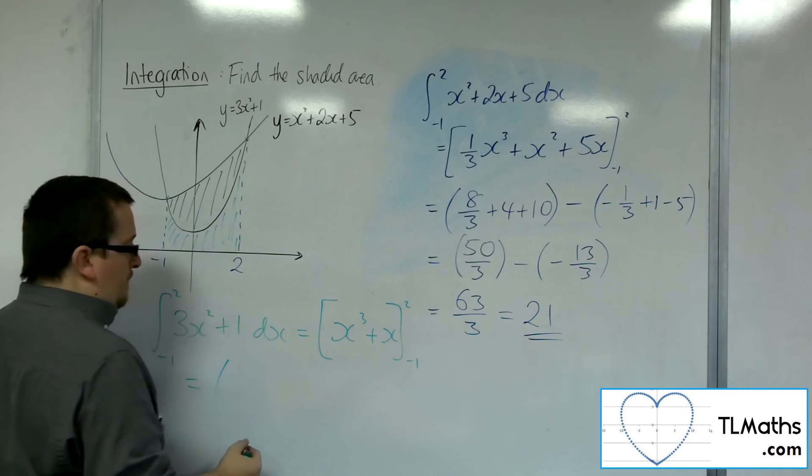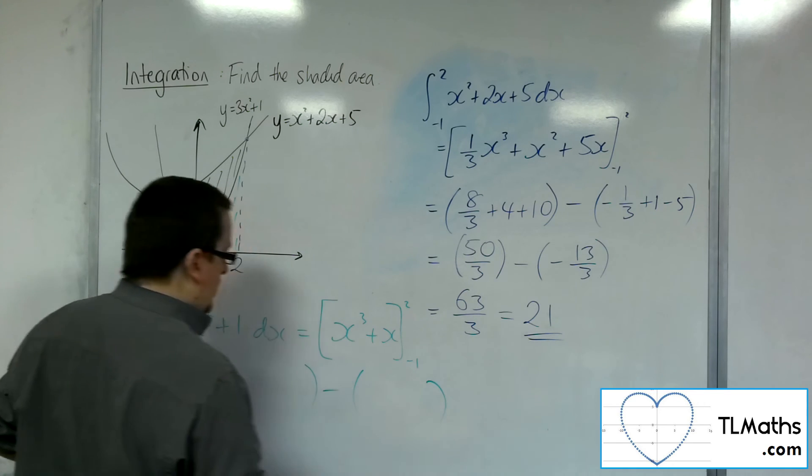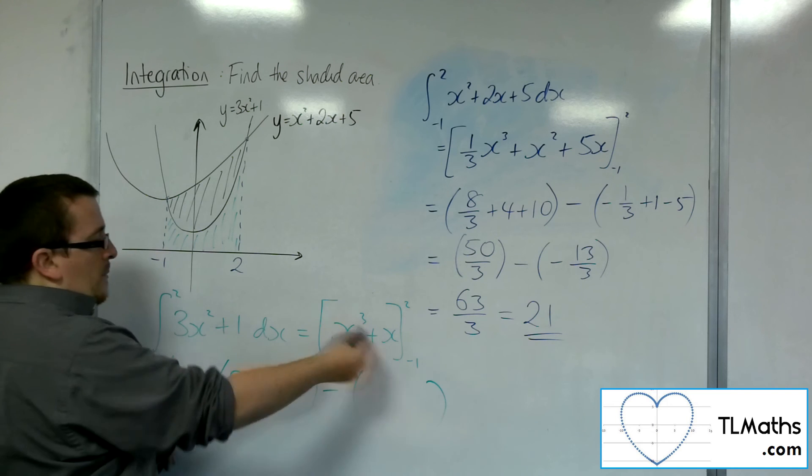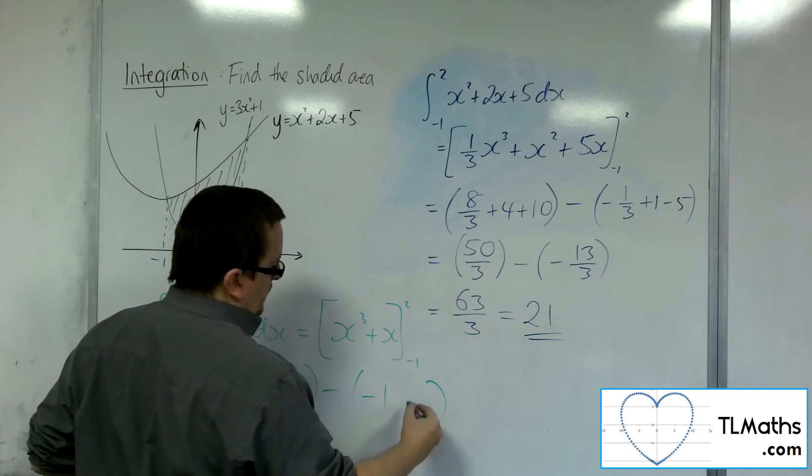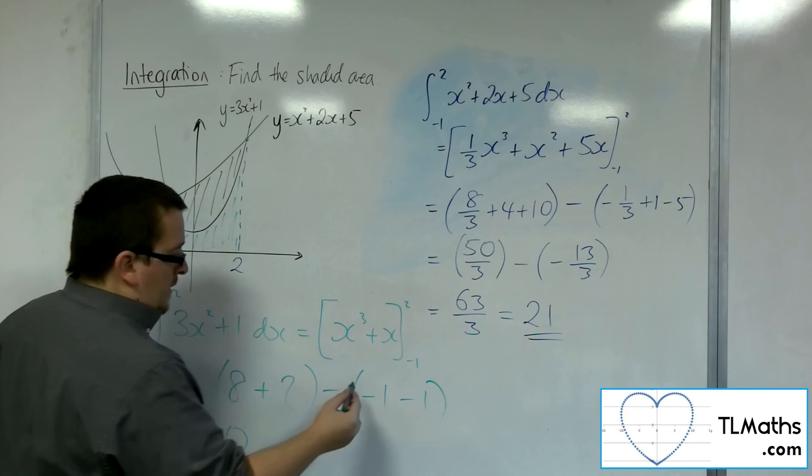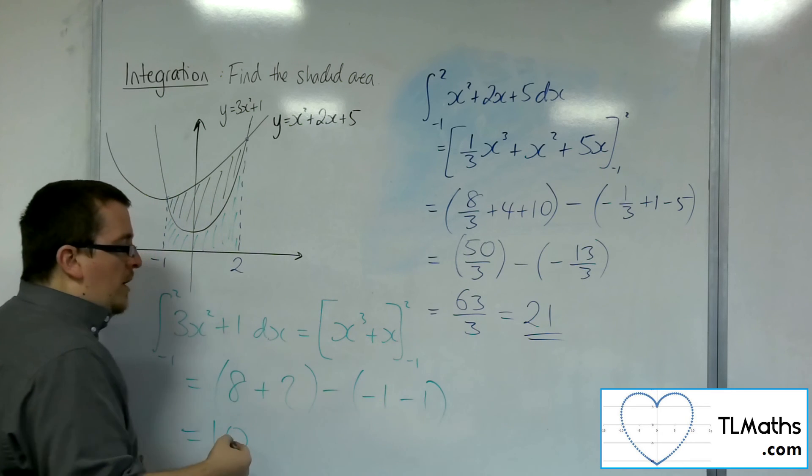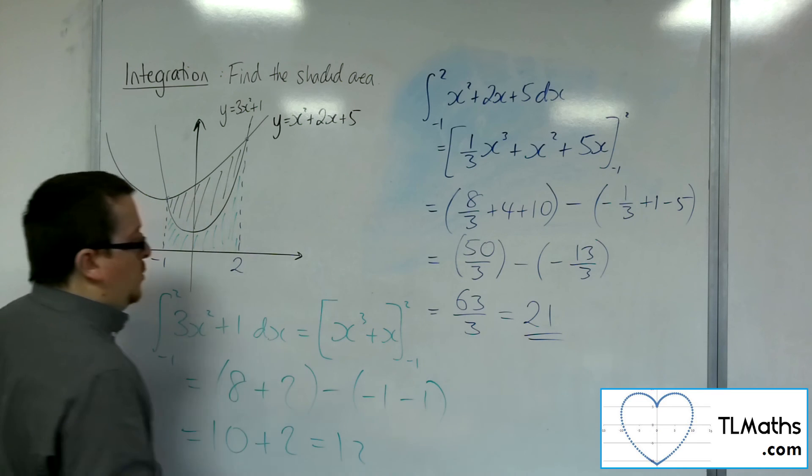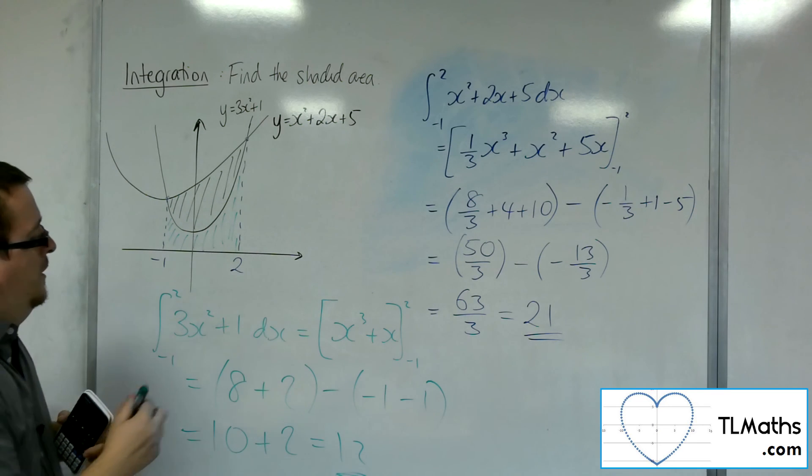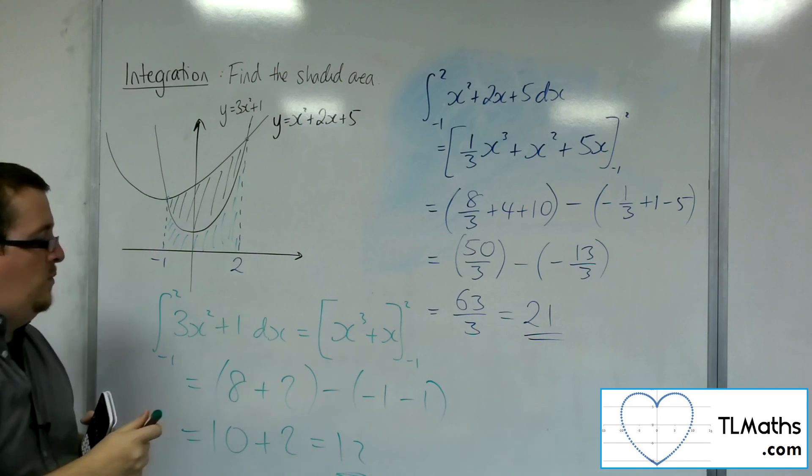Let's open up a bracket. So 2 cubed plus 2, and then we've got minus 1, substituting in, so minus 1, take away 1. So we've got 10, take away minus 2. So that's 12. So the green part is 12. The big section is 21.